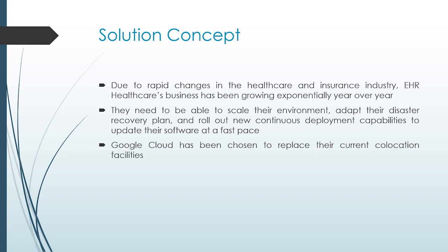Looking at these, a few phrases are particularly important. 'Growing exponentially year over year' accounts for scalability. They need to scale their environment, adapt their disaster recovery plan, and roll out new continuous deployment capability — which is CI/CD — to update their software at a fast pace. These are the key things to keep in mind in order to come up with the solution.